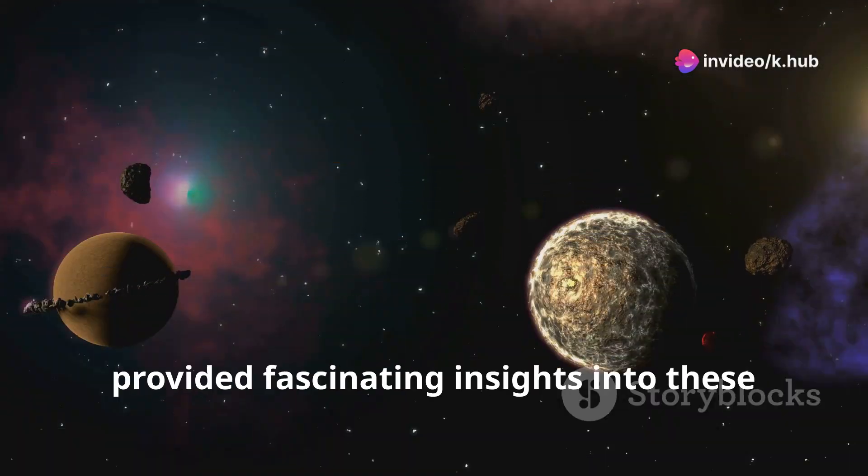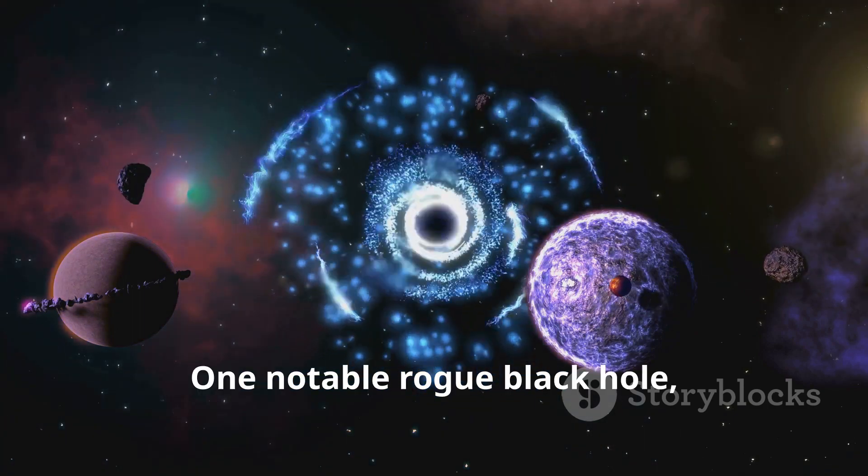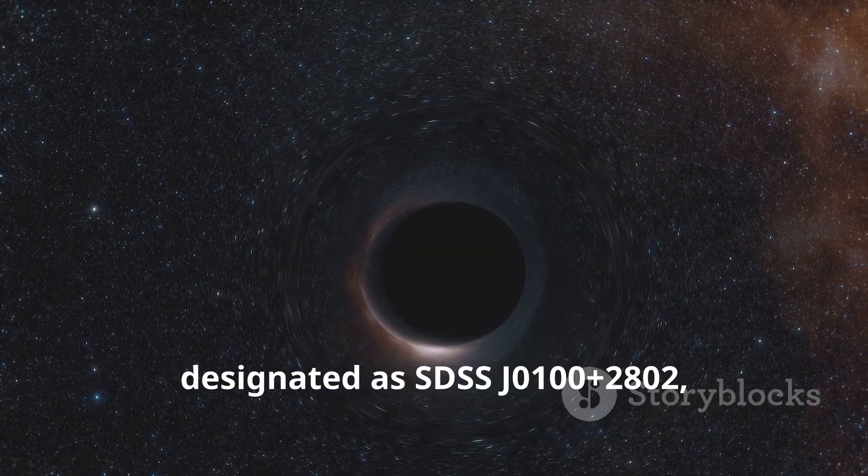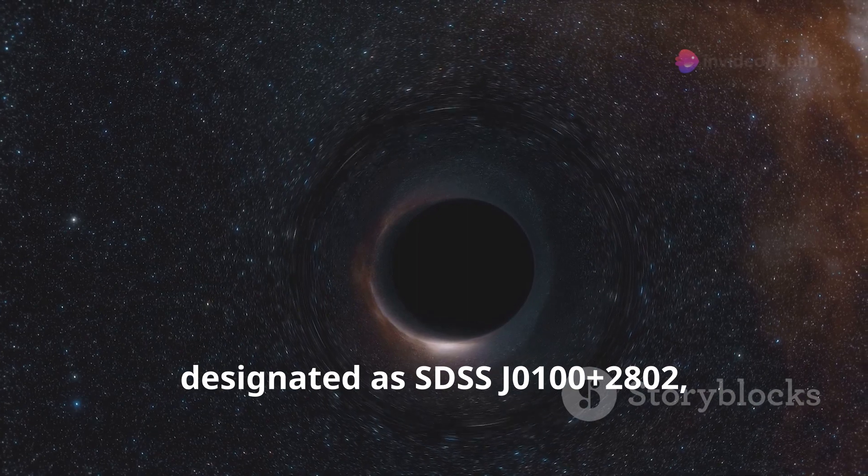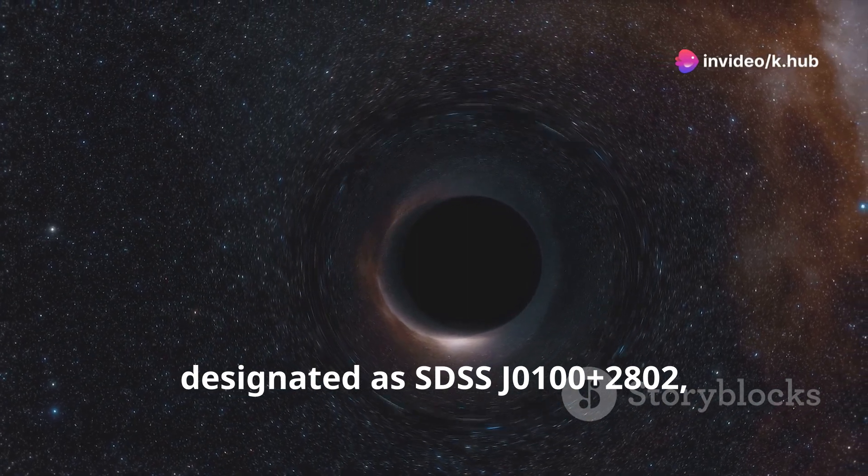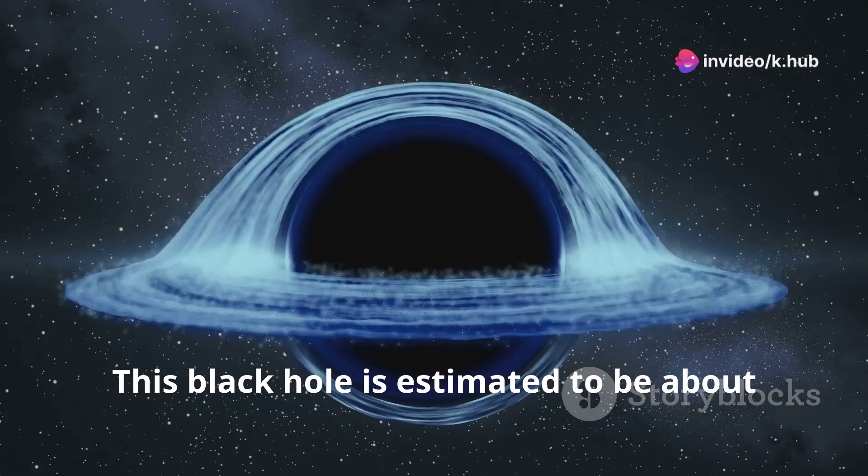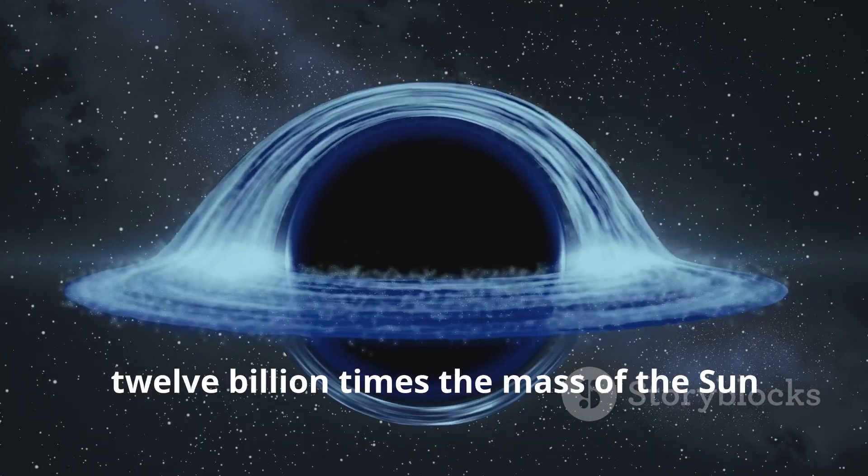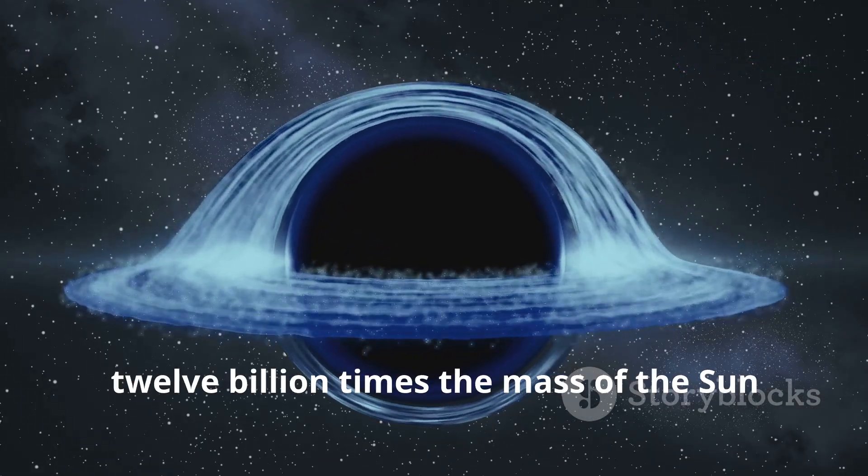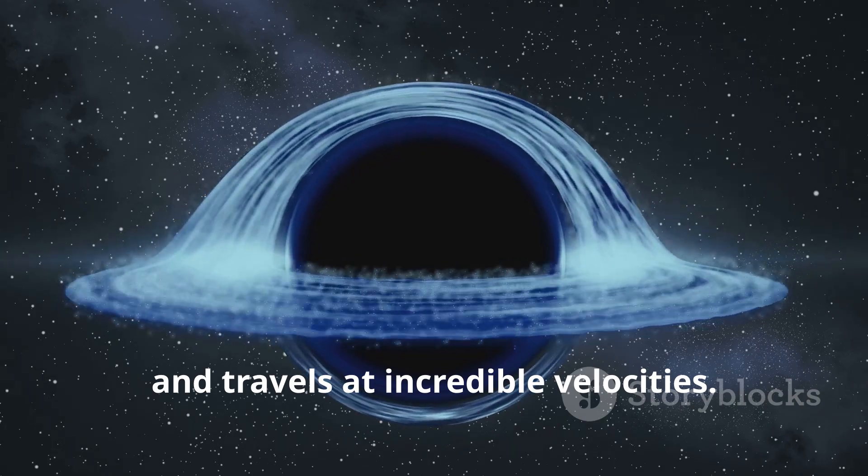Recent observations and simulations have provided fascinating insights into these cosmic wanderers. One notable rogue black hole designated as SDSS J0100+2802 has been detected speeding through space. This black hole is estimated to be about 12 billion times the mass of the sun and travels at incredible velocities.